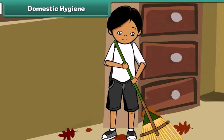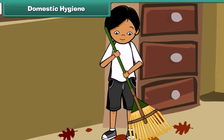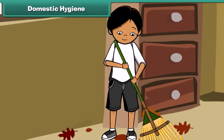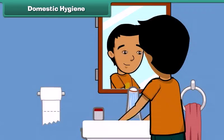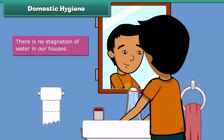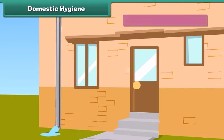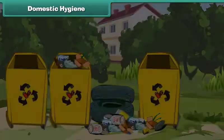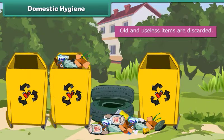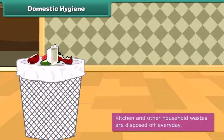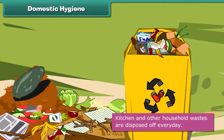Cleanliness of surroundings begins with domestic hygiene. It involves keeping our homes neat and clean. We can maintain domestic cleanliness by ensuring there is no stagnation of water in our houses, the toilets and sinks are clean, the drainage pipes are clear, old and useless items are discarded, and kitchen and other household waste are disposed of every day.